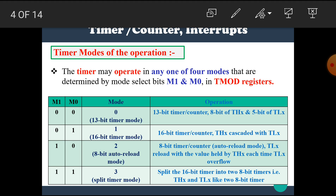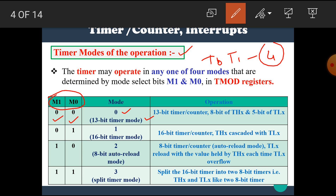Now let's see today's topic: the timer modes of operation. In the 8051 microcontroller, there are two timers, T0 and T1. These two timers work in four modes. The four modes are selected using the bits M1 and M0 of the TMOD register. When M1 M0 = 00, mode 0 (13-bit timer mode) is selected. When M1 = 0 and M0 = 1, mode 1 (16-bit timer mode) is selected. When M1 M0 = 11, mode 3 (split timer mode) is selected.